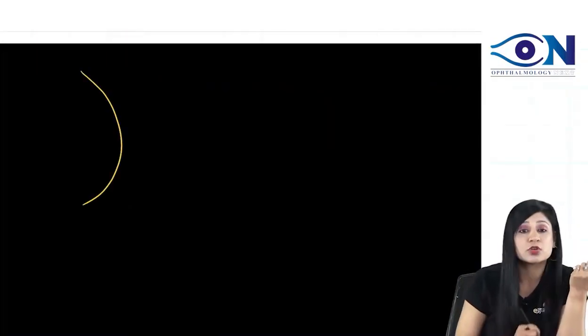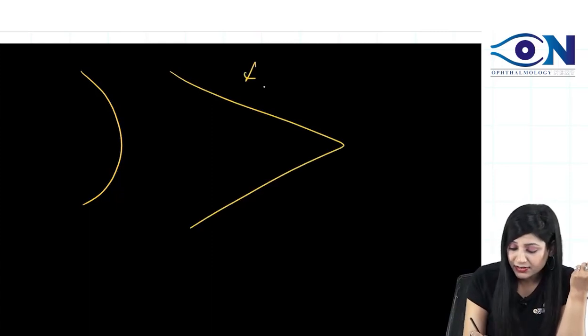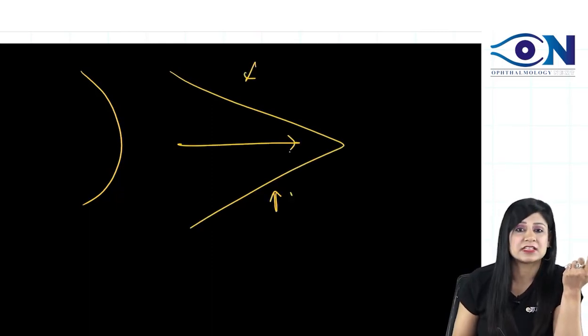Normally, the cornea should be like this but it is like this. So, you are getting this uneven surface and you are getting this increased axial length.